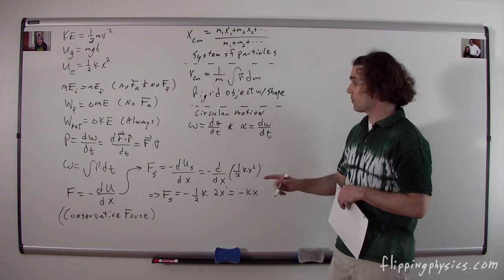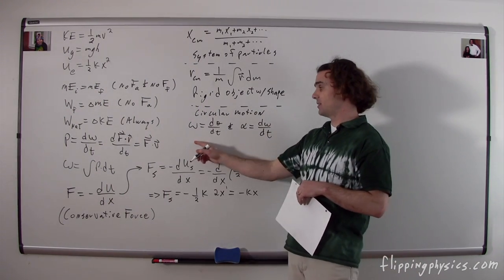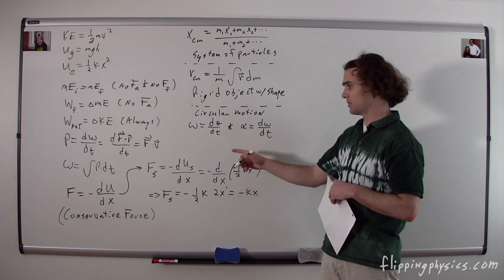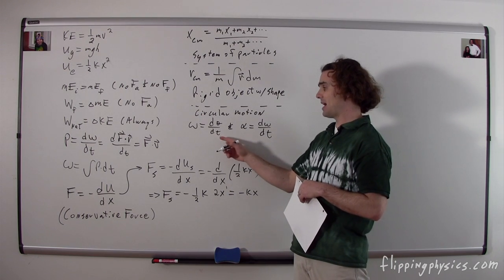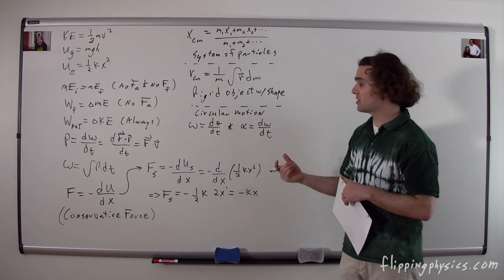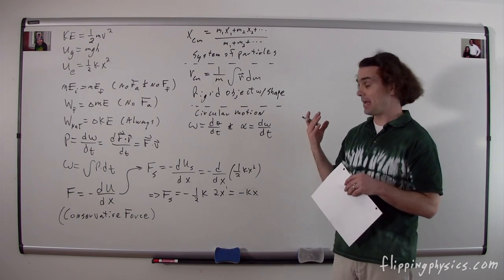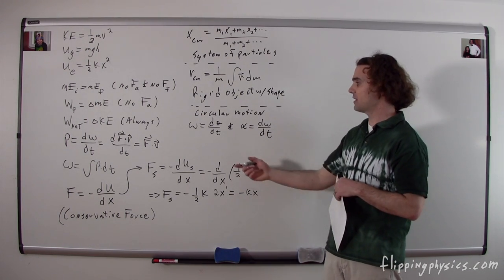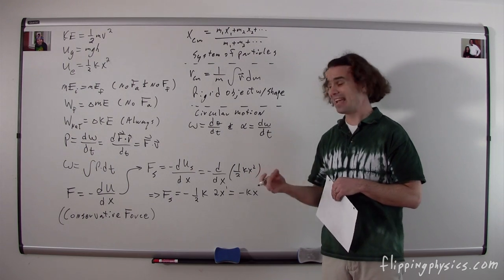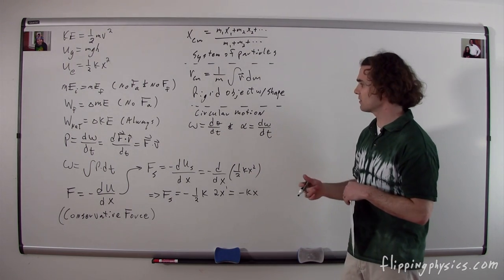We can talk about circular motion where we have the angular velocity, which is omega, equal to the derivative of the angular position as a function of time. You could also have change in theta over change in time, which would be the average angular velocity, as opposed to the derivative, which is the instantaneous angular velocity.